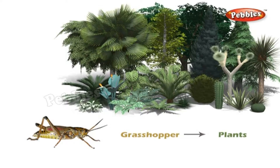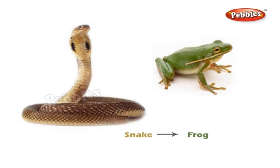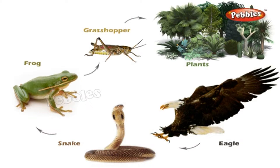Food chain. A grasshopper eats a green plant. A frog eats the grasshopper. The frog is eaten by a snake and the snake is eaten by an eagle. This chain of events is called a food chain. Who eats what in the environment makes up a food chain. The study of food chains shows us the interdependence of various organisms in the environment.